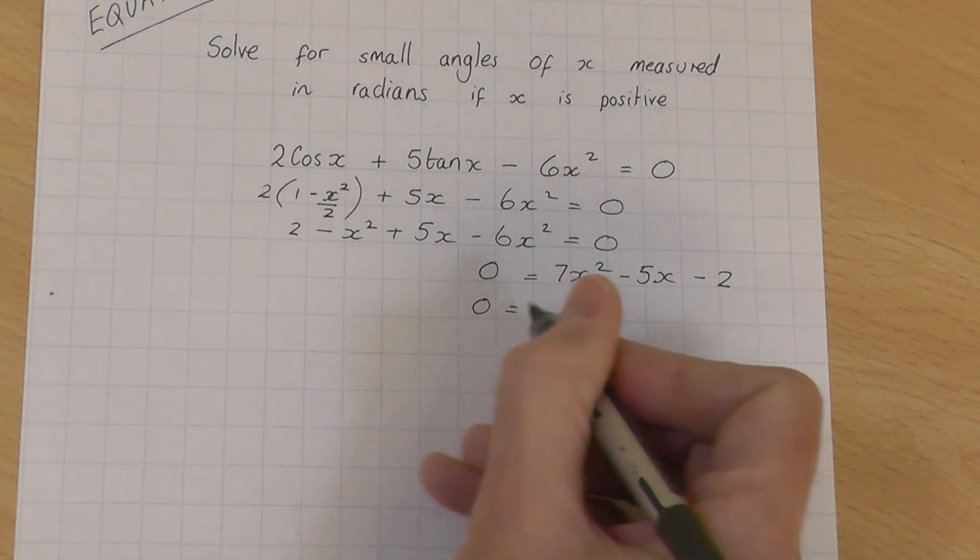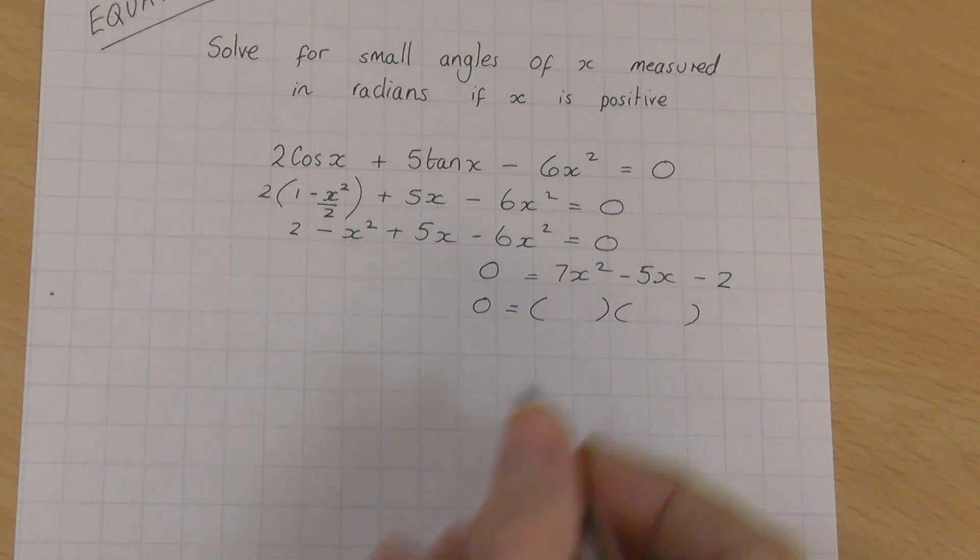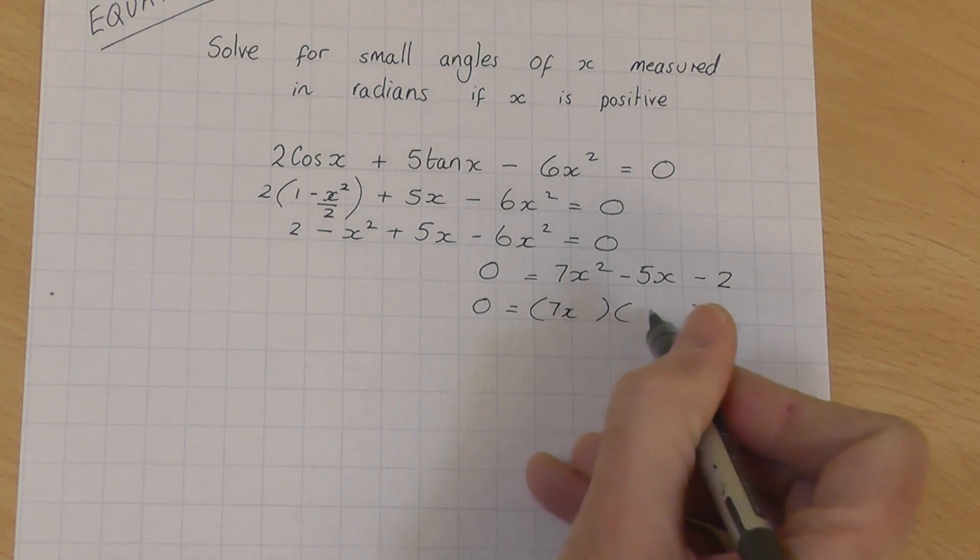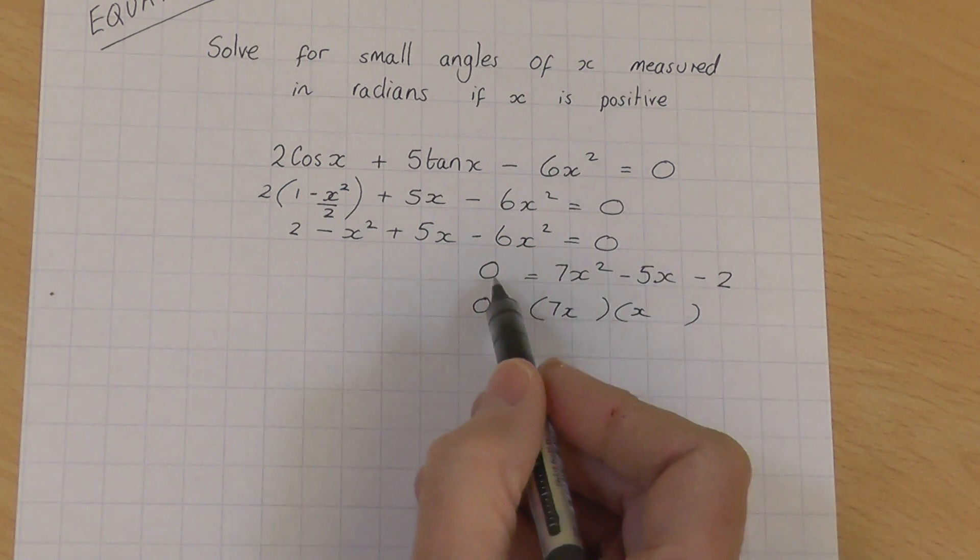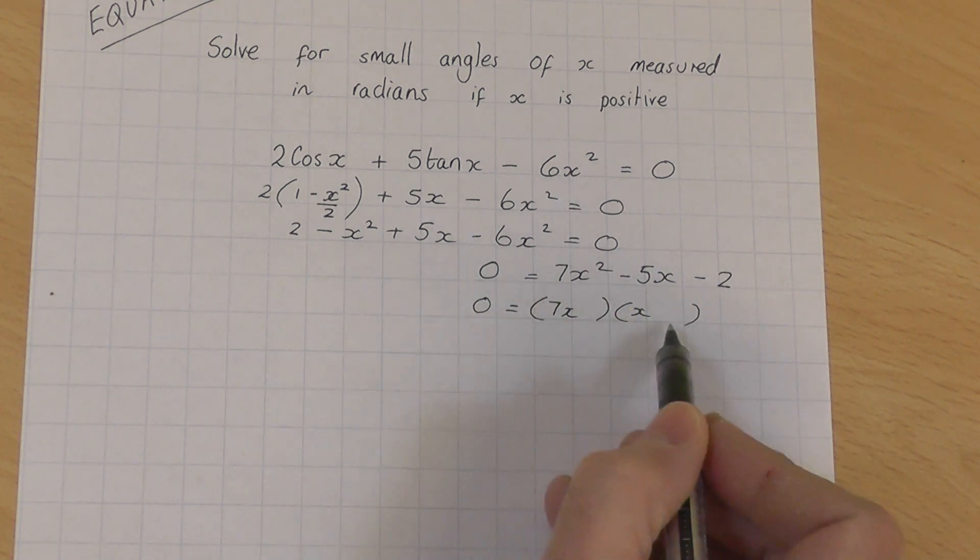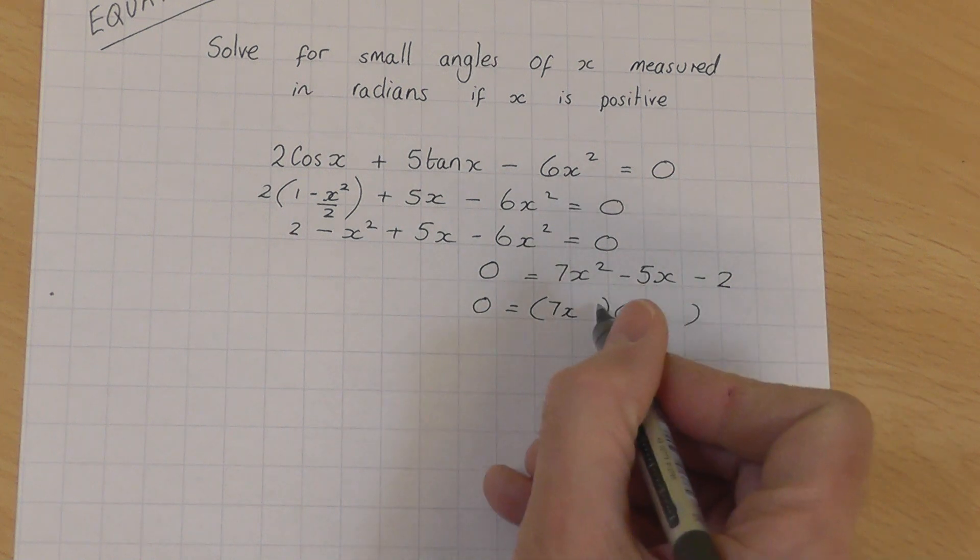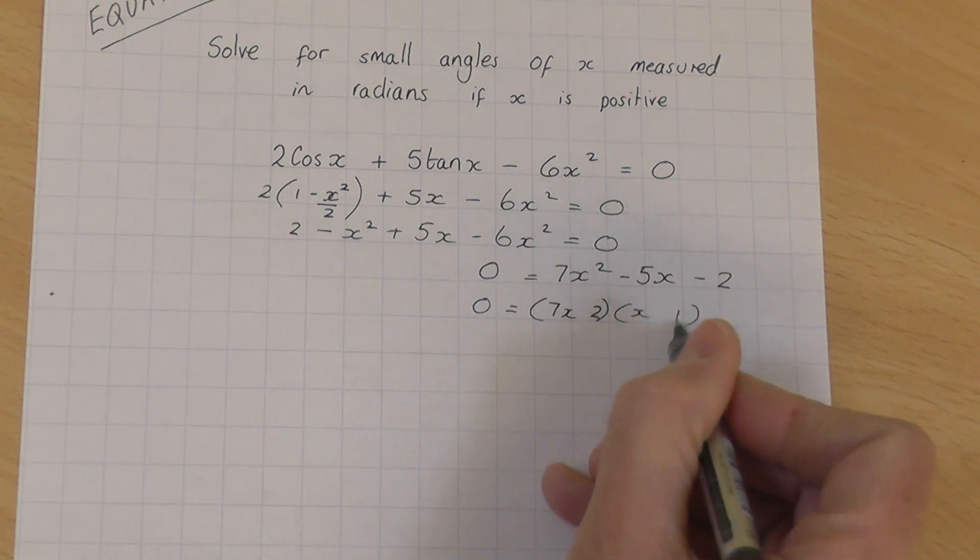Let's do it by just inspecting and writing down the double brackets. 7x squared, x and x. I've deliberately set up something here which will factorise. So 7x times x, 7x squared. Let's say I put a 2 there and a 1 there.